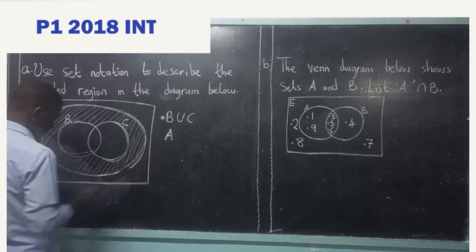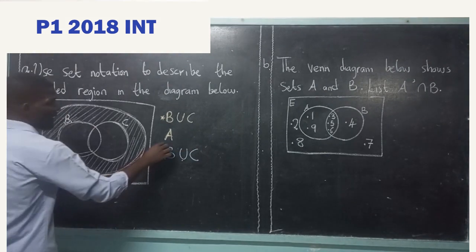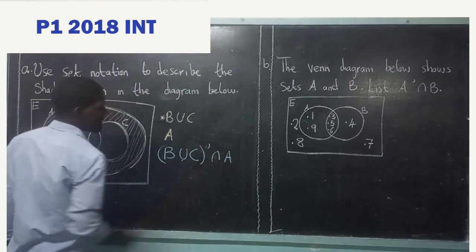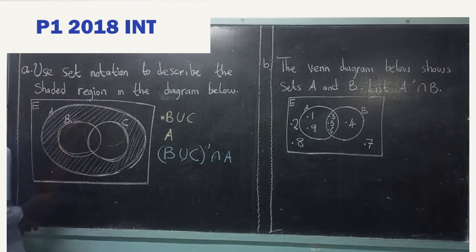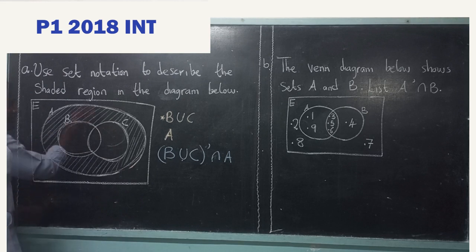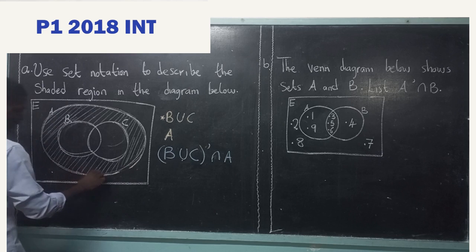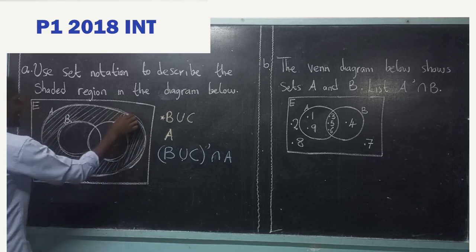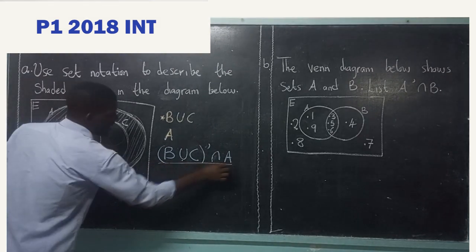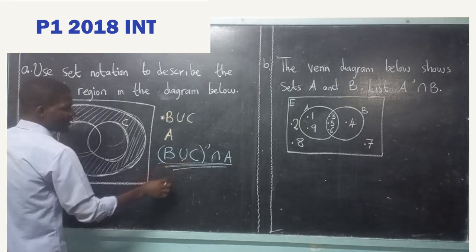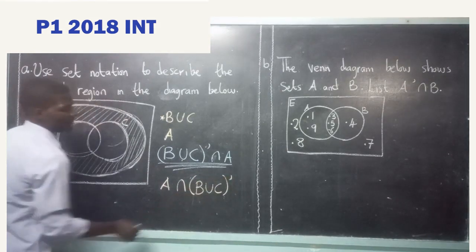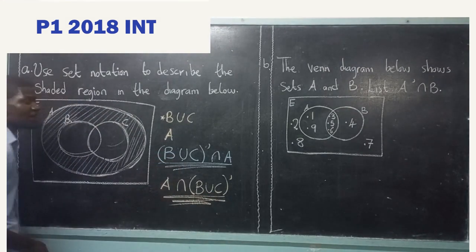The first way we can write our answer is (B union C) complement intersection A. The fact that the inside was not shaded suggests to us that B union C was a complement. For us to bring it just within SET A, we intersect it with A. That's answer 1. Answer 2: you can write this same one as A intersection (B union C) complement. Either way is correct.